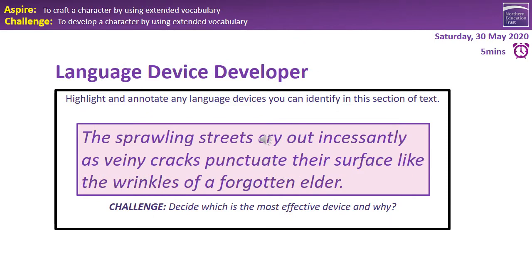Hello Year 7. What I'd like you to do is read the section in the middle and highlight and annotate any language devices you can identify in this section of the text. It says: 'the sprawling streets cry out incessantly as veiny cracks puncture their surface like the wrinkles of a forgotten elder.' Once you've highlighted the language devices, give yourself a challenge and decide which is the most effective device and why. You've got about three minutes. Off you go.